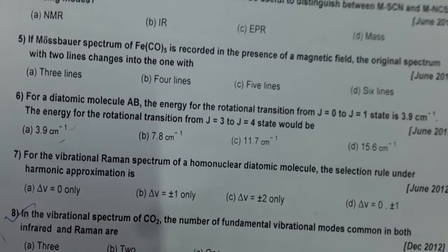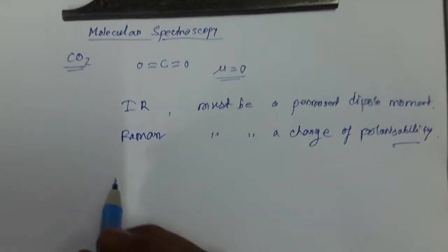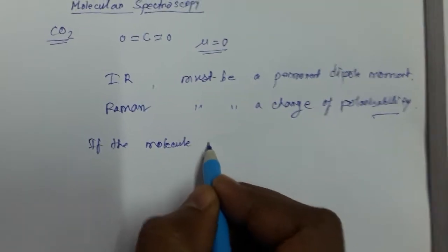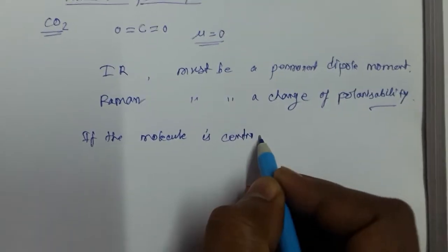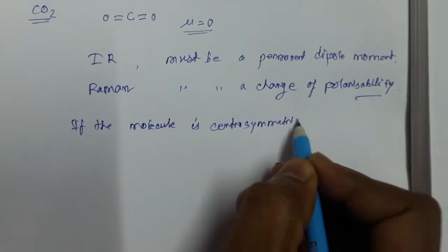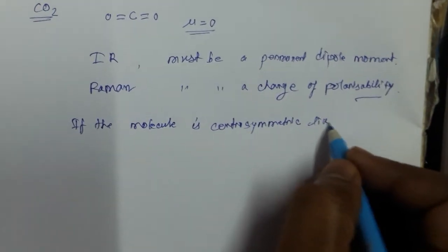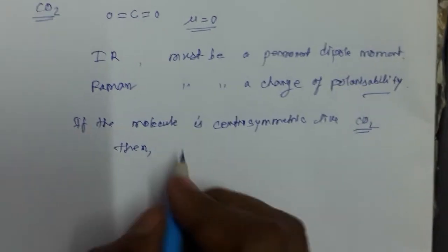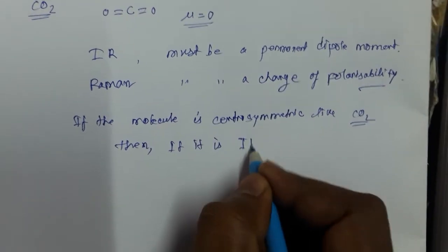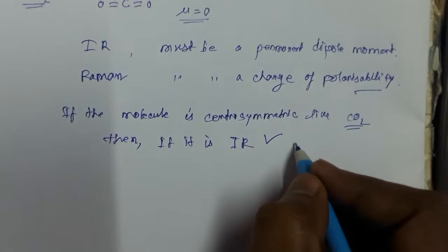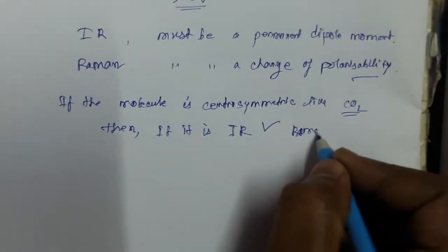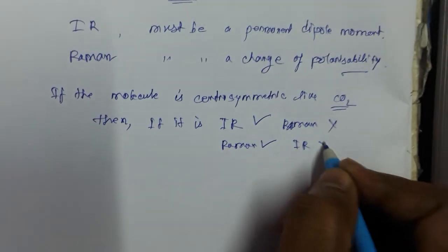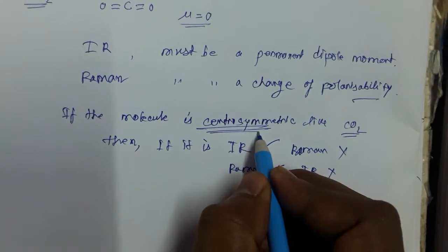For the mutual exclusion principle: if the molecule is centrosymmetric, like CO2, then if it is IR active it must be Raman inactive, and if it is Raman active it must be IR inactive.